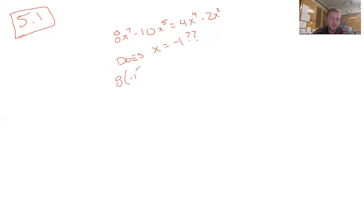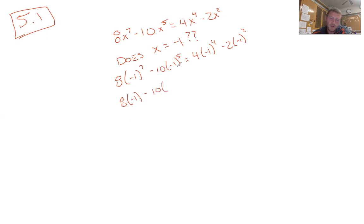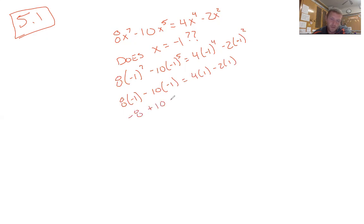So: 8 times negative 1 to the 7th minus 10 times negative 1 to the 5th — does that equal 4 times negative 1 to the 4th minus 2 times negative 1 squared? Negative 1 to the 7th is still negative 1, because any odd power stays the same sign. Any even power makes it positive. So that gives us negative 8 plus 10 on the left, and 4 minus 2 on the right, giving us 2 equals 2.